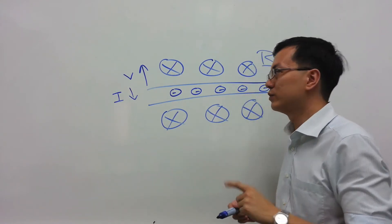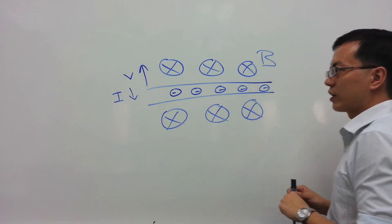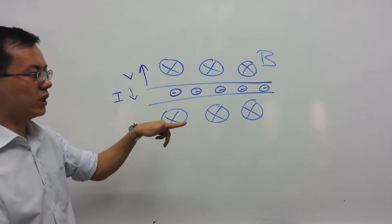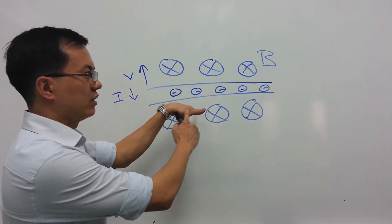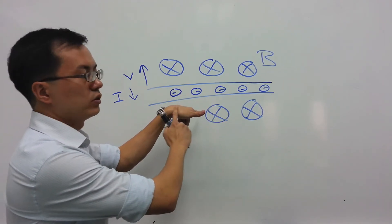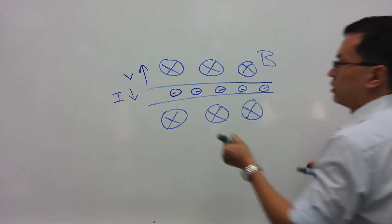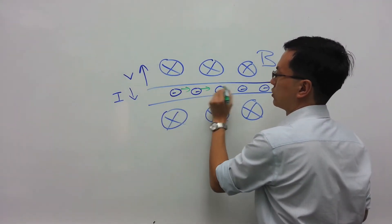And if we use Fleming's left hand rule, if the current is flowing downward and the magnetic field is into the board, the force acting on the electrons should be towards the right. The force acting on the electrons is towards the right.